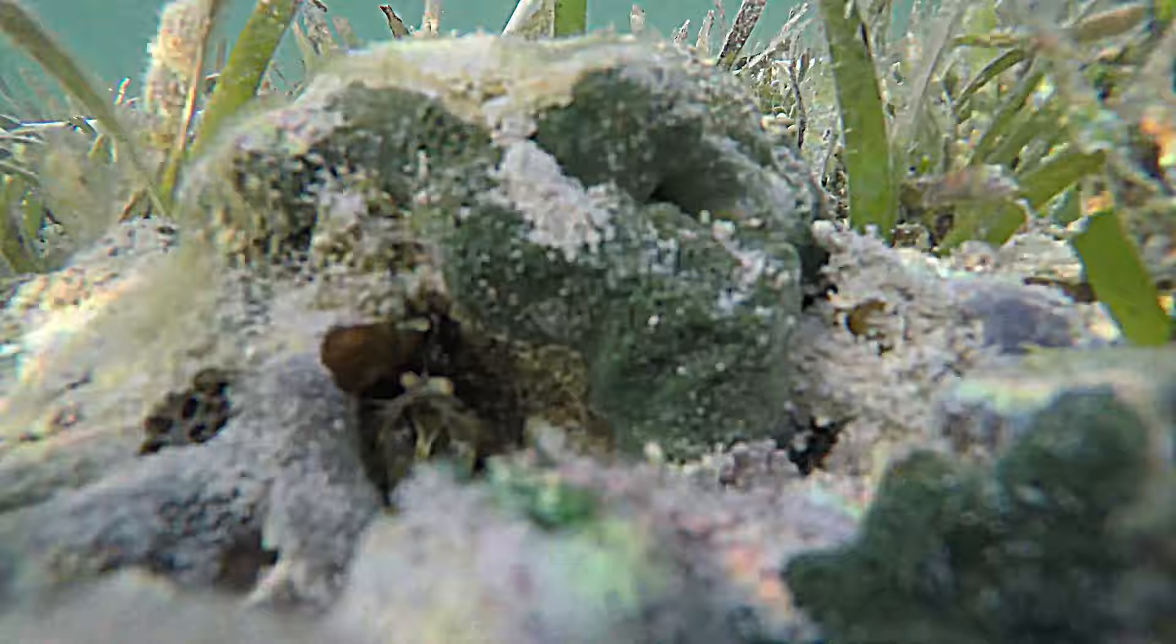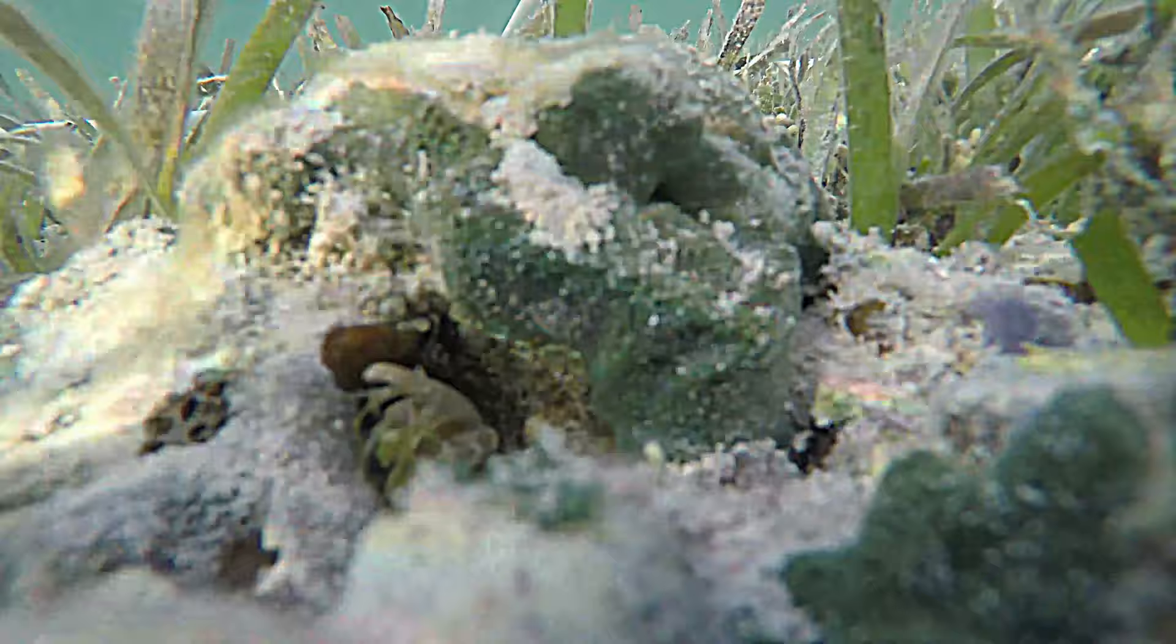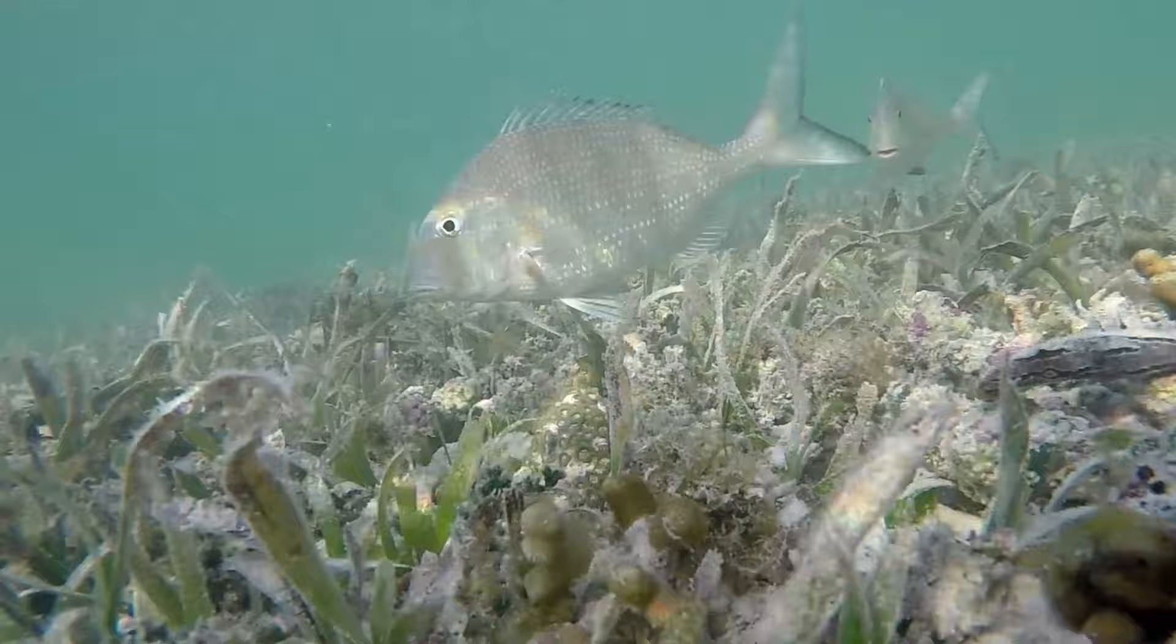In these shallow waters, mantis shrimp of the species Neogonodactylus oerstedi occupy small holes in rocks, coral, and sponges for use as burrows. In these refuges, they spend most of their day safely concealed from their predators.